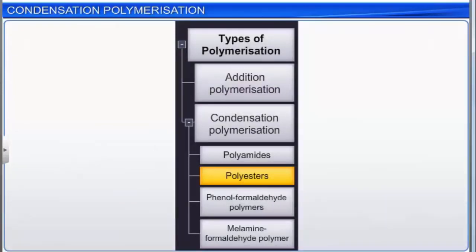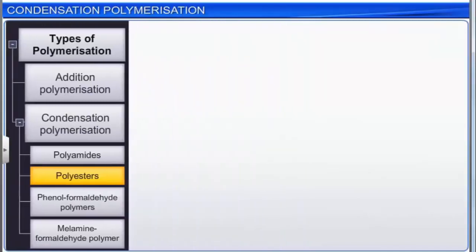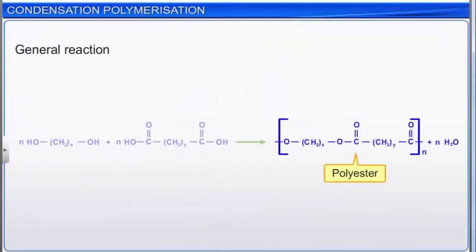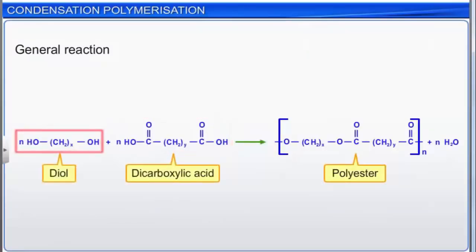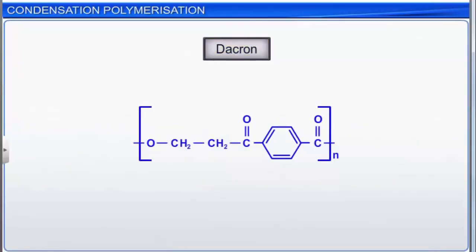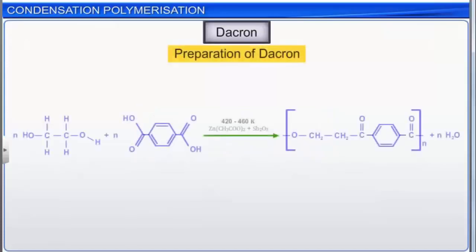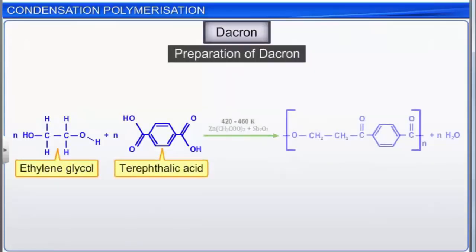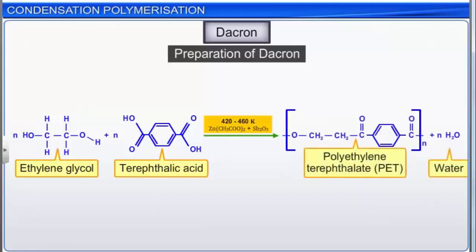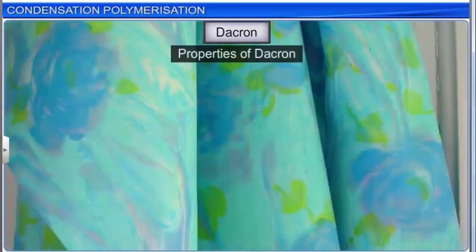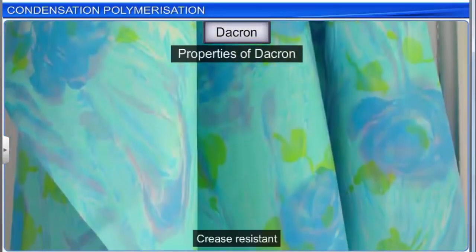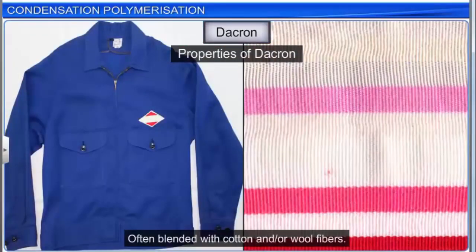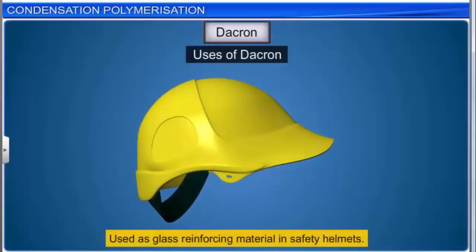Polyesters are another important group of condensation polymers. The general reaction to obtain a polyester is a condensation reaction between a dicarboxylic acid and a diol. Dacron is the trade name for polyethylene terephthalate (PET), a common polyester. To make Dacron, ethylene glycol and terephthalic acid are reacted at 420 to 460 Kelvin in the presence of a zinc acetate and antimony trioxide catalyst. Dacron is crease resistant and is often blended with cotton or wool. It is also used as glass reinforcing material in safety helmets.